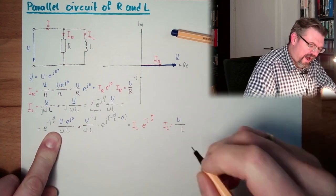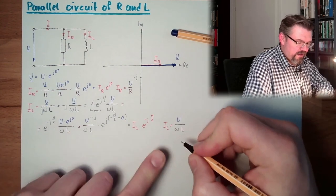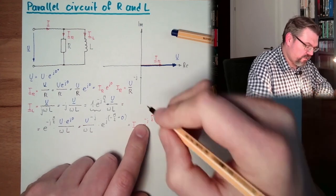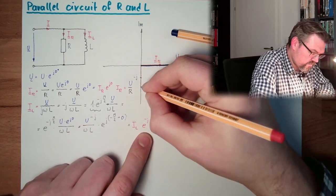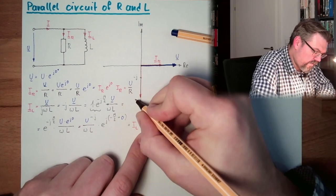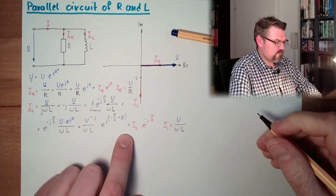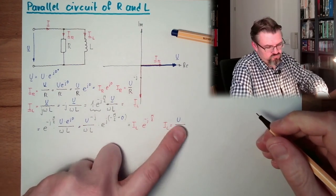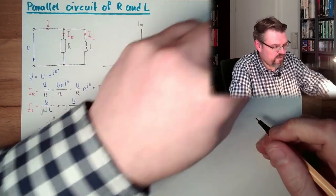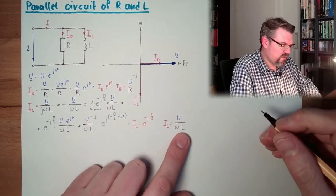So actually we are ending up by IL multiplied by e to the j minus pi half, and IL equals U divided by omega L. So my IL is minus pi half, so it's going down here. Here is IL.